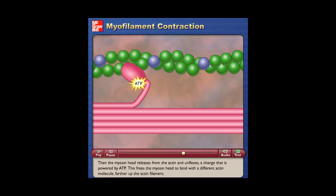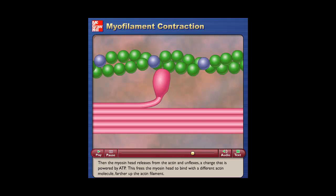Then the myosin head releases from the actin and unflexes, a change that is powered by ATP. This frees the myosin head to bind with a different actin molecule farther up the actin filament.